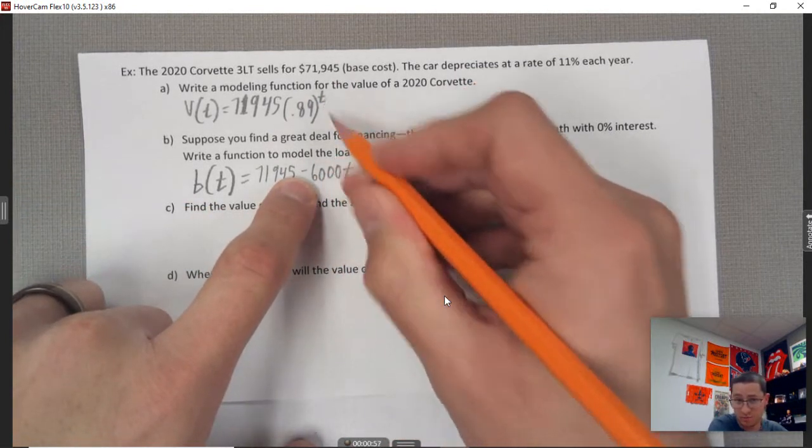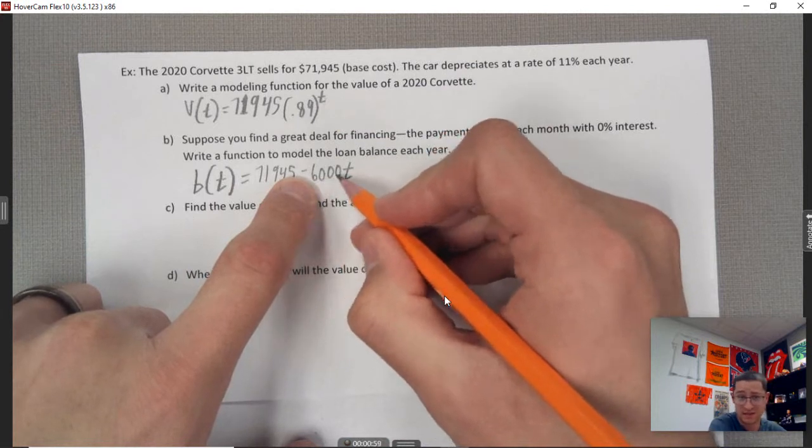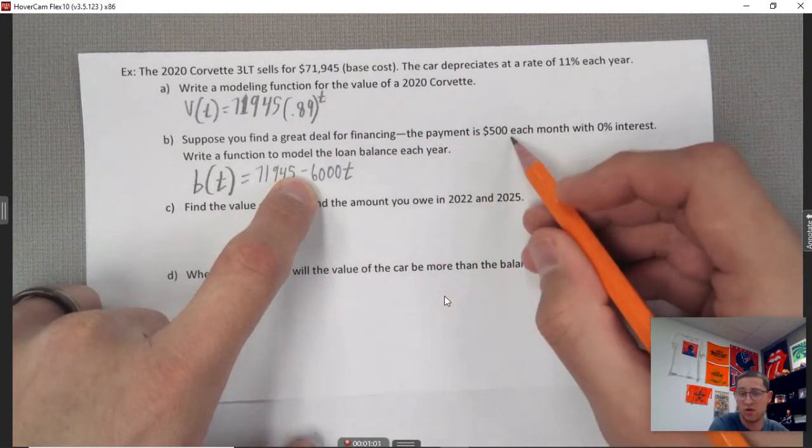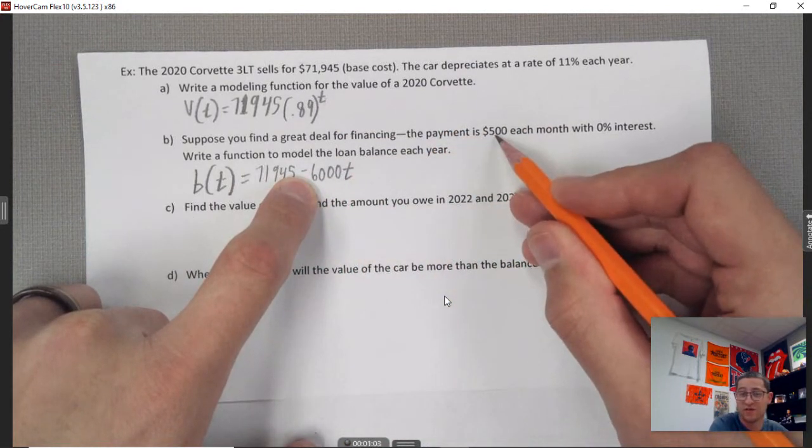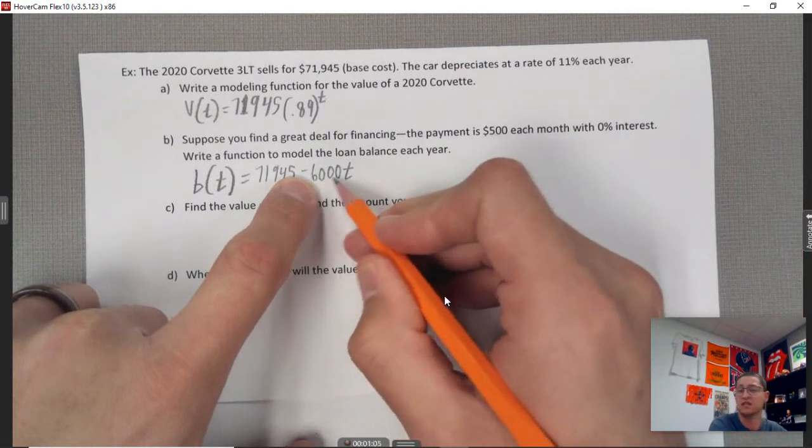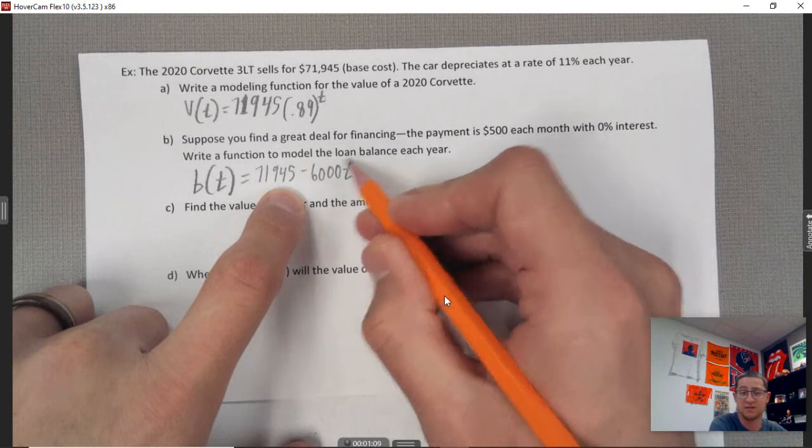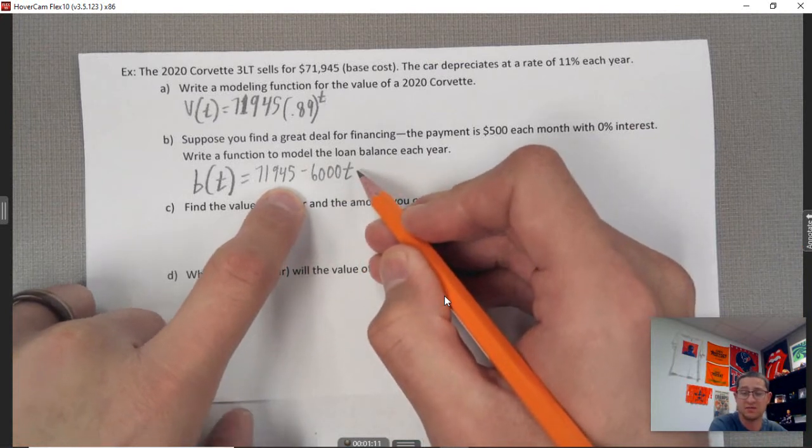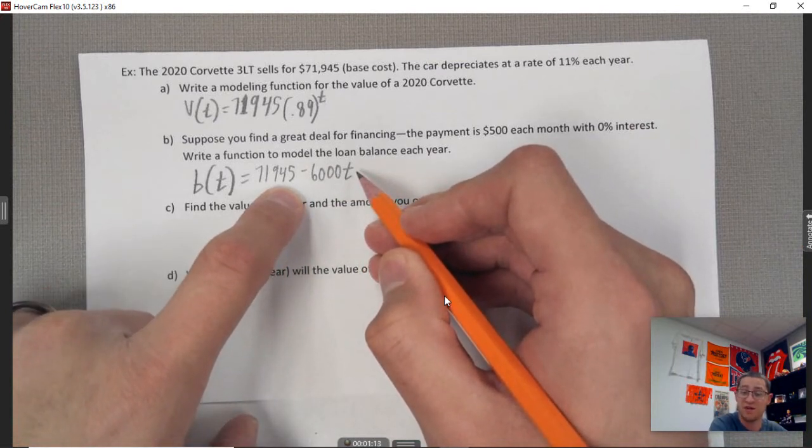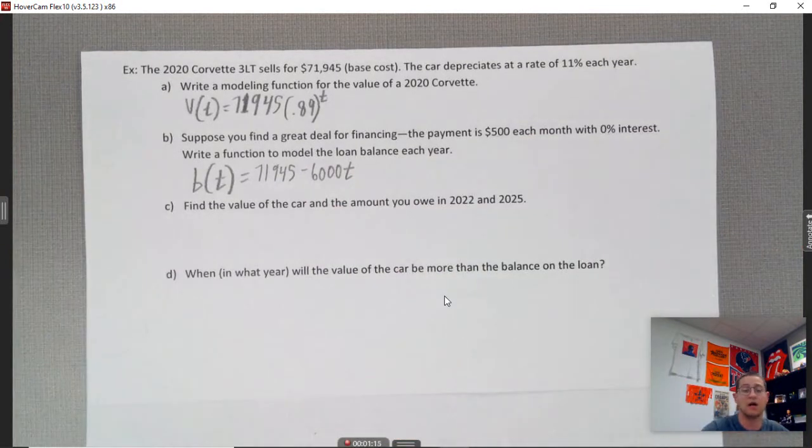because t is per year - you're taking away $6,000 of that. It says $500 per month, so $500 times 12, that's where I actually get this $6,000 value. So per year you're subtracting $6,000 on the balance, which is the amount you have left to pay.